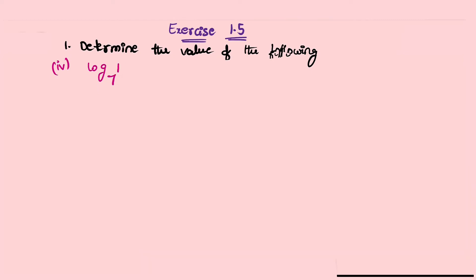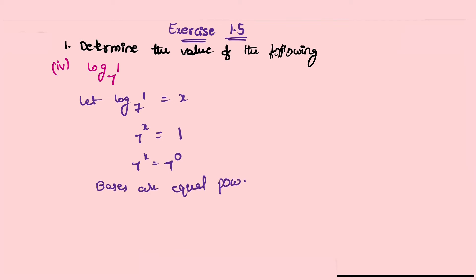Fourth problem: log base 7 of 1. Let log base 7 of 1 equal to x. Exponential form: 7^x = 1. Now 7^x = 7^0, because any number to the power 0 equals 1. Bases are equal so powers are equal: x = 0. Therefore log base 7 of 1 equals 0.